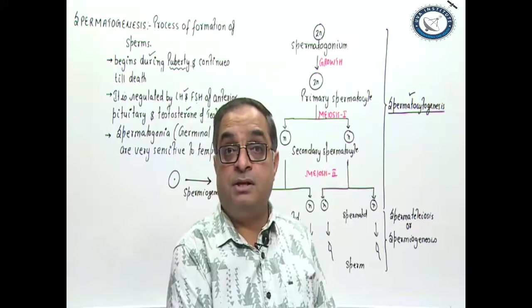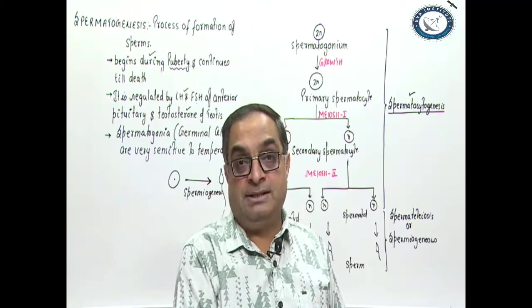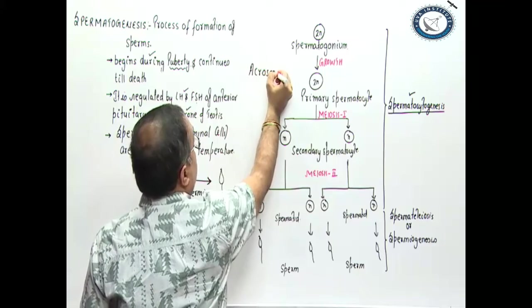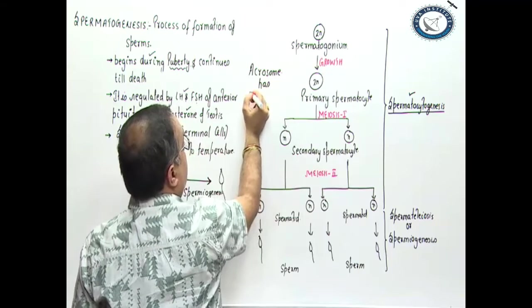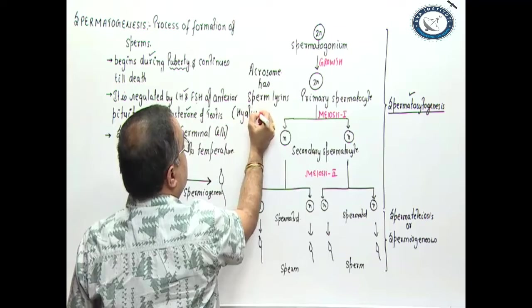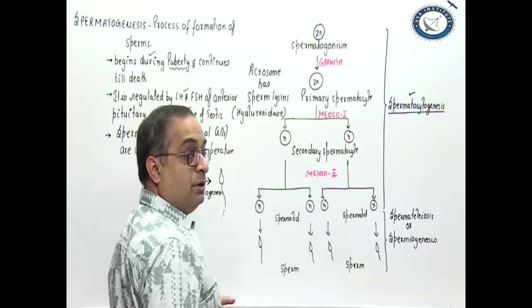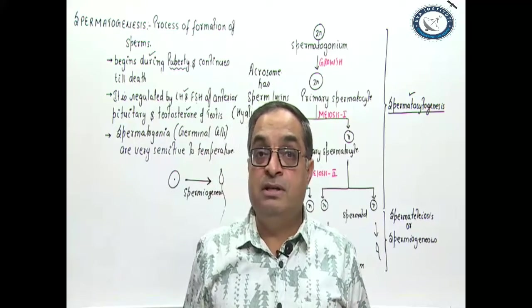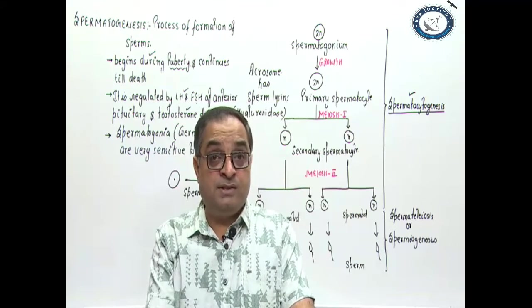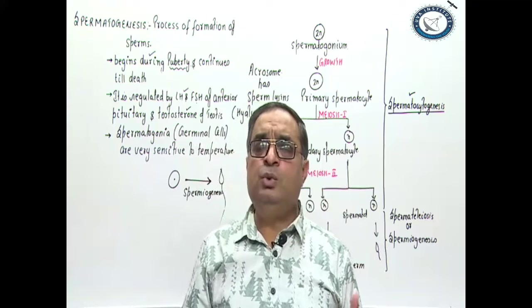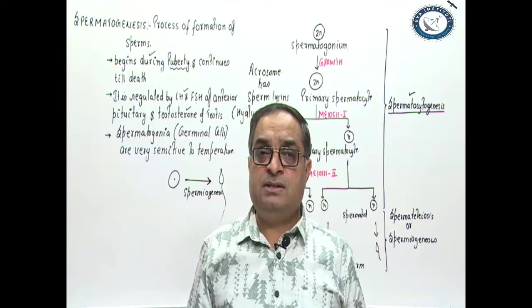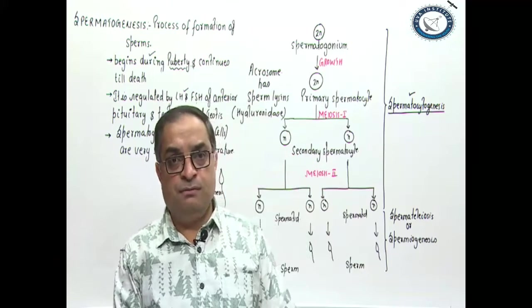During spermiogenesis, acrosome is formed. Acrosome of the sperm develops from Golgi complex. It can be compared to a modified lysosome. This acrosome has many hydrolytic enzymes which are collectively called sperm lysins like hyaluronidase. This hyaluronidase enzyme, it is involved in facilitating the process of fertilization. We will discuss in detail how these different enzymes dissolve the various membranes which surround the oocyte. There is hyaluronidase, neuraminidase, zona lysin, corona penetrating enzyme, acid phosphatase, alkaline phosphatase. Many enzymes are involved in this process of fertilization.